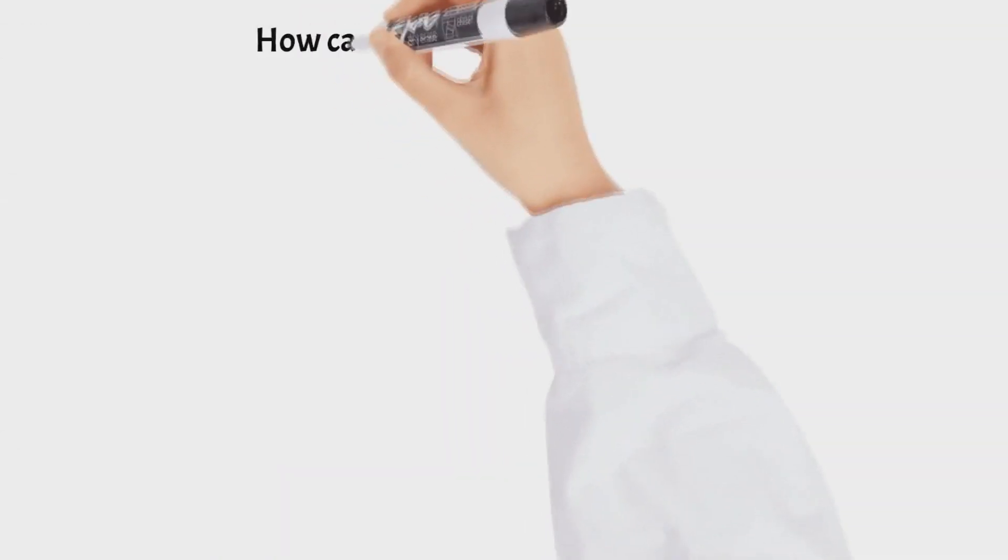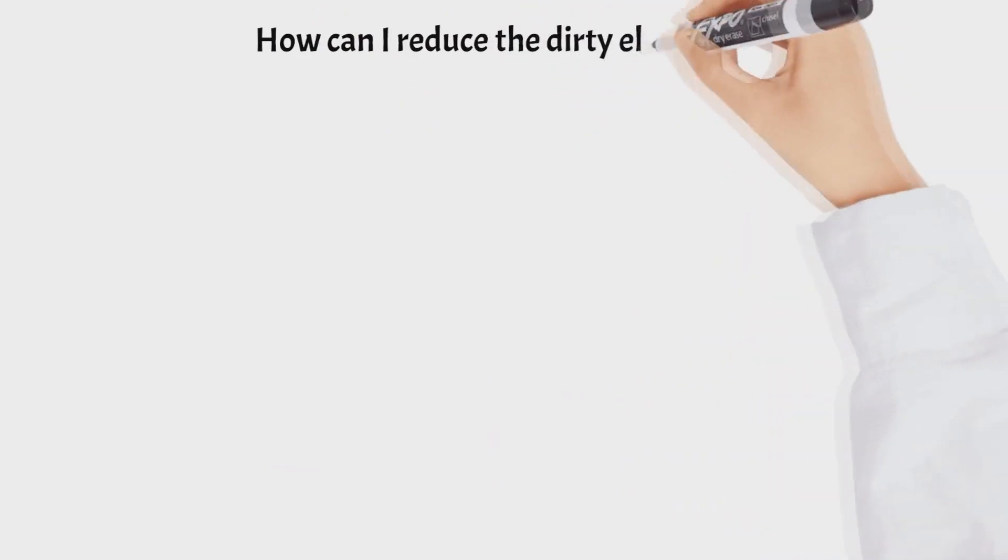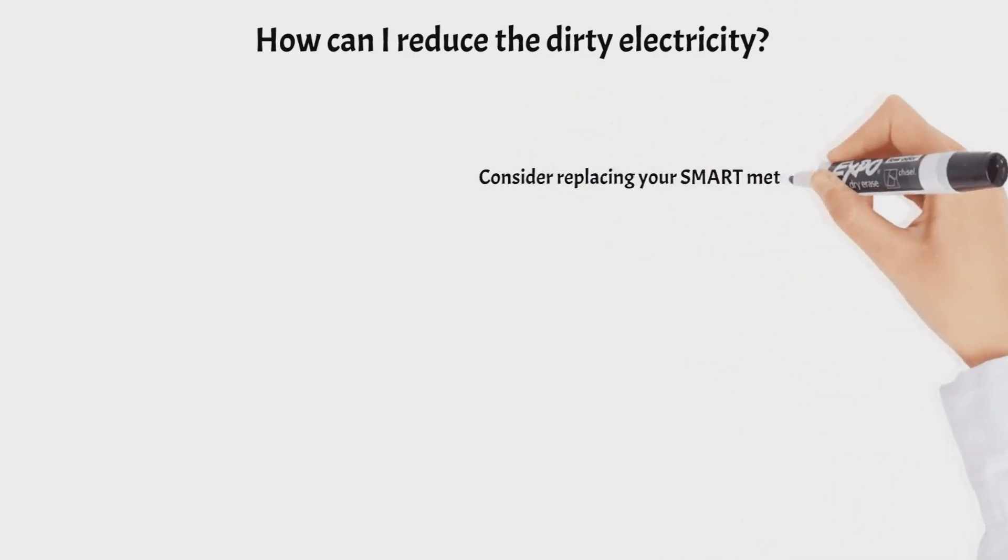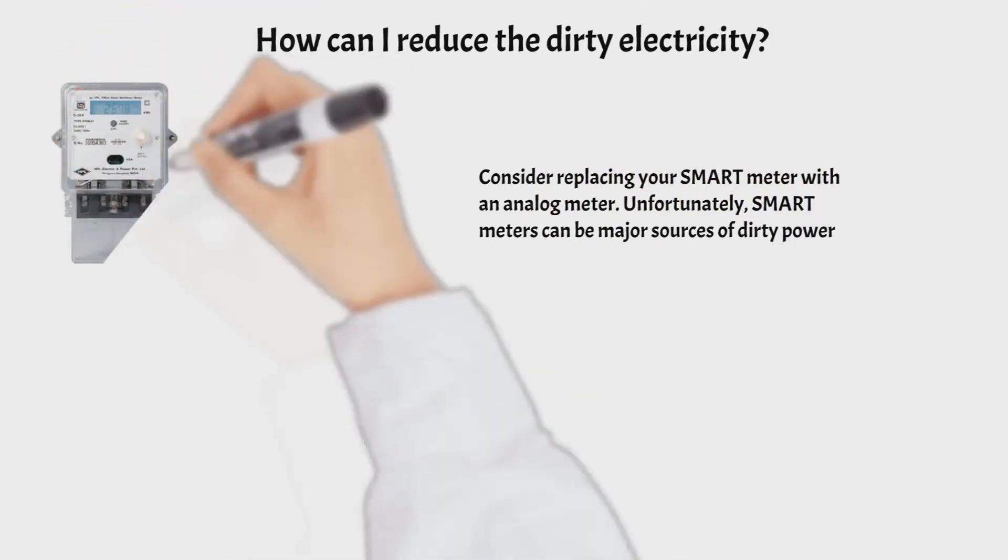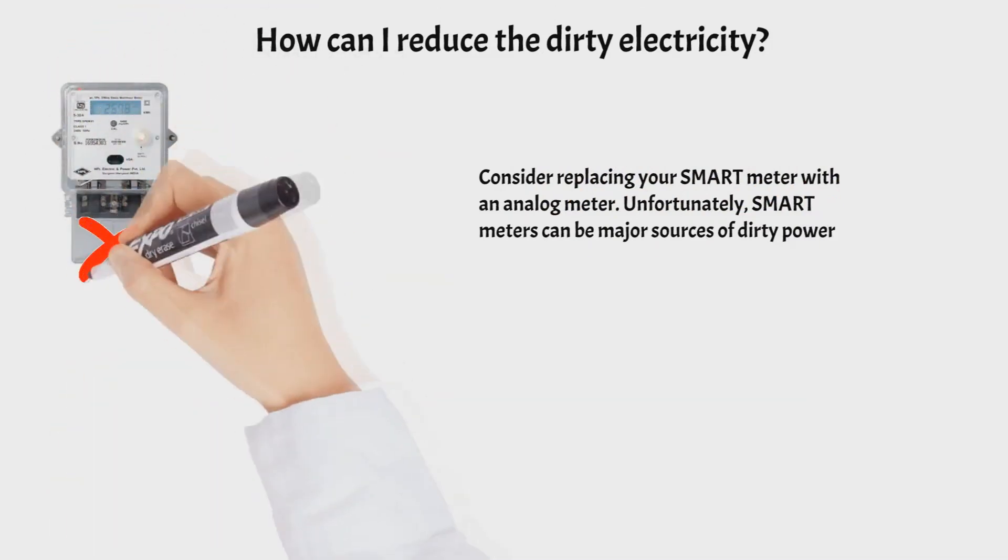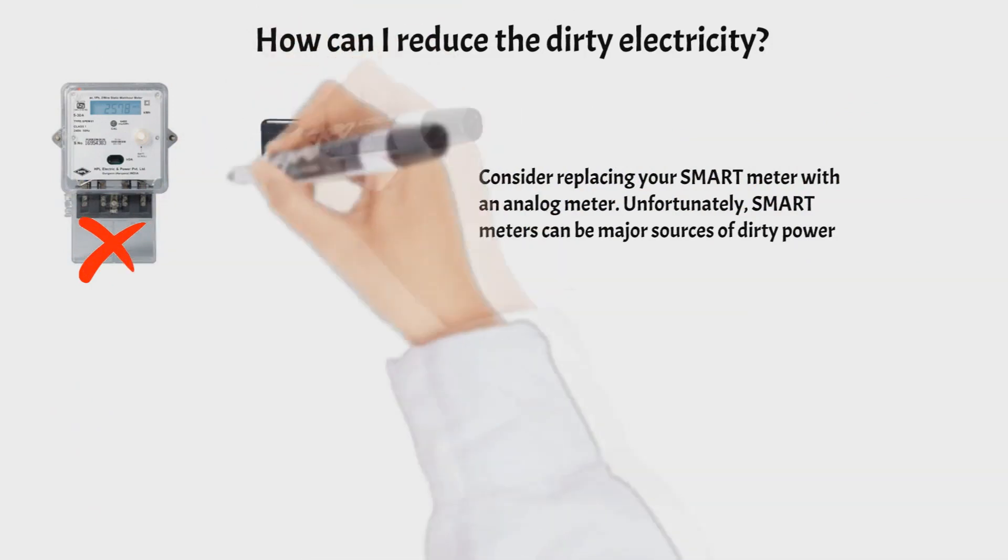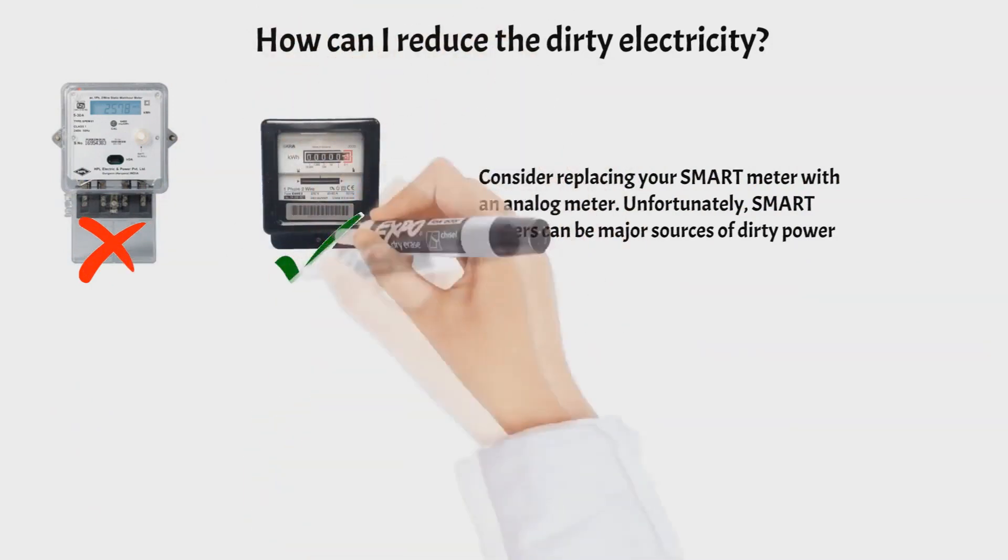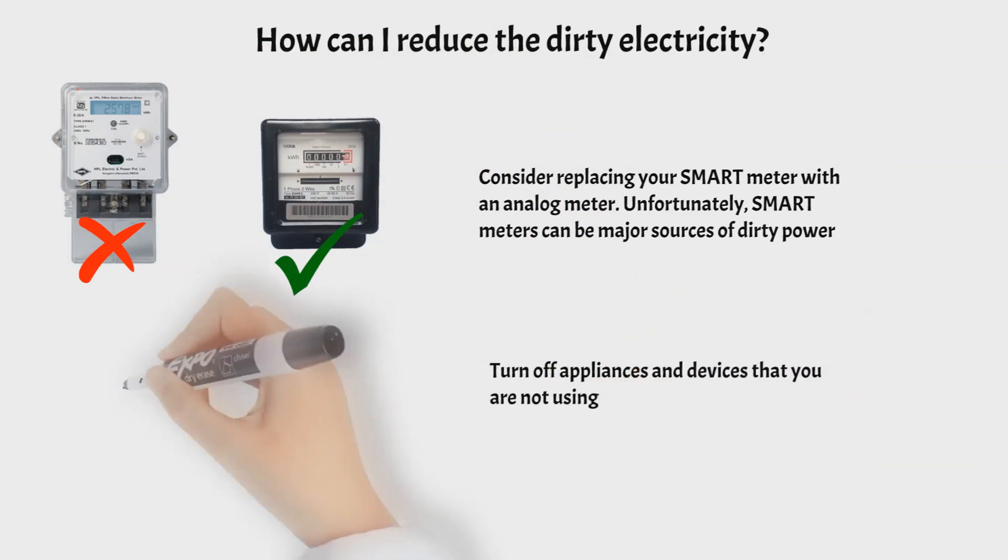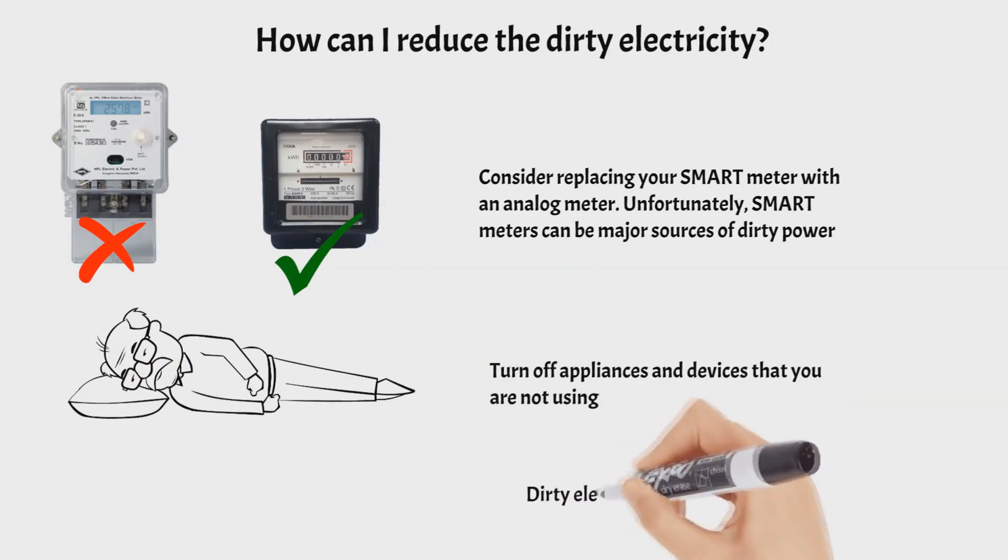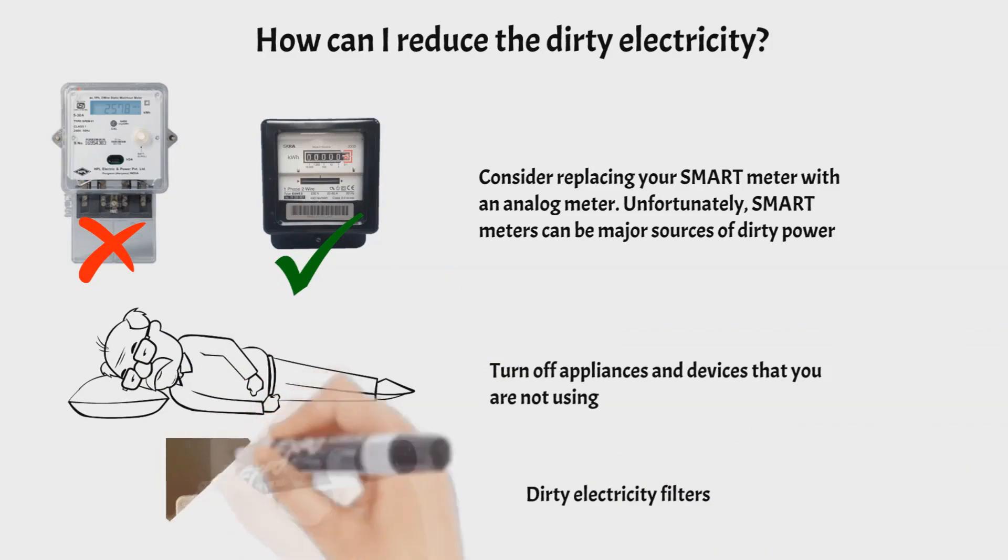What else can we do to reduce dirty electricity in our house? First, replace your smart meter with an analog meter, because smart meters are known to be a major source of dirty power as they contain power electronic components. Second, turn off appliances and devices you're not using when sleeping. Also, you can use dirty electricity filters which can eliminate or reduce the dirty electricity in your home.